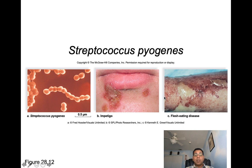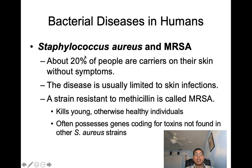Staphylococcus aureus is carried by about 20% of people on their skin without symptoms, and the disease is usually limited to skin infections. MRSA stands for methicillin-resistant Staphylococcus aureus — a strain resistant to the antibiotic methicillin. It's very dangerous and can kill young, otherwise healthy individuals. MRSA often possesses genes coding for toxins not found in other Staphylococcus strains, making it especially dangerous.